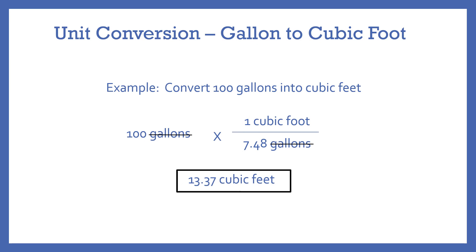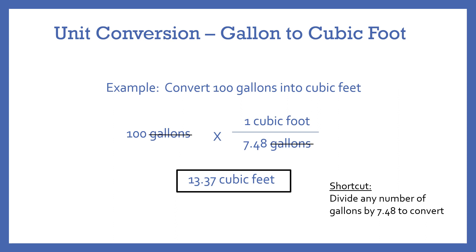If you notice here, the only calculation we needed to perform was to divide the number of gallons by 7.48. So in the future, if you have any value of gallons and you want to convert to cubic feet, you just need to take that number of gallons and divide it by 7.48. And voila, you have cubic feet.